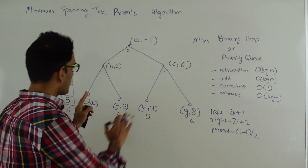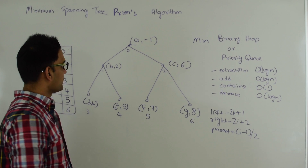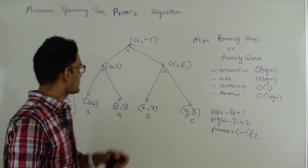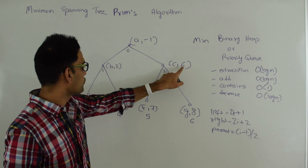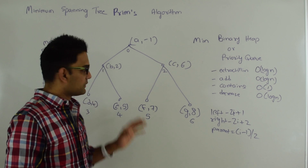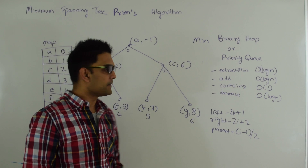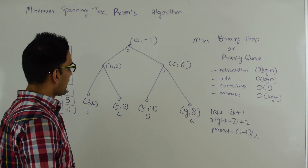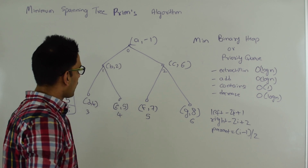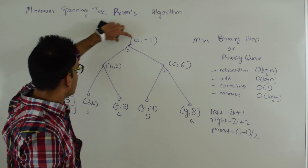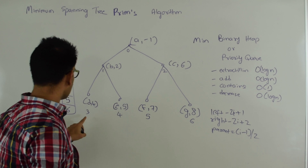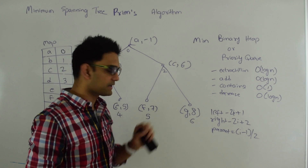Let's see how this works. In a regular minimum binary heap, the value at every node is less than or equal to both its children. So -1 is less than or equal to 2 and 6; 2 is less than or equal to 4 and 5; 6 is less than or equal to 7 and 8. This satisfies all the properties of a minimum binary heap. The values are stored in an array, so this is just a logical diagram. In reality this pair is stored at location 0, location 1, 2, 3, 4, 5, and 6 of the array.